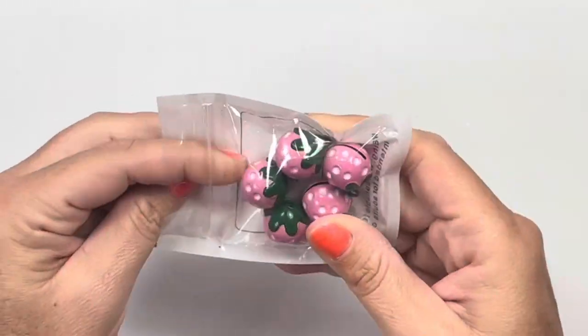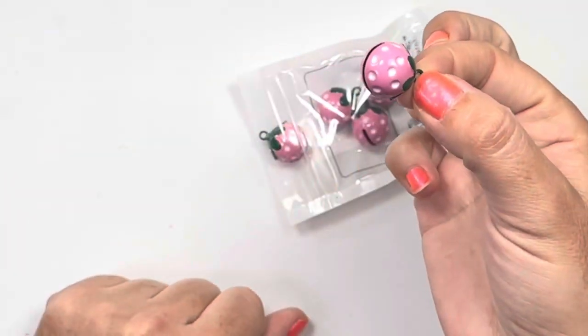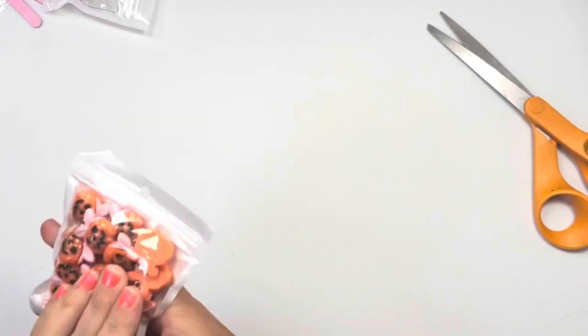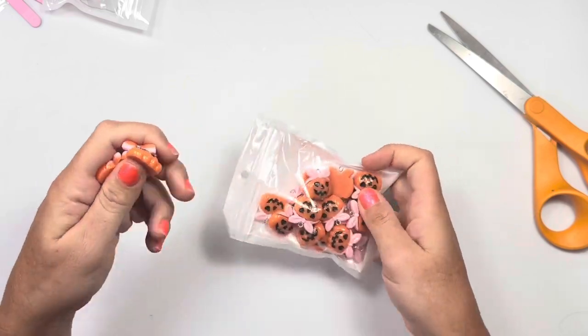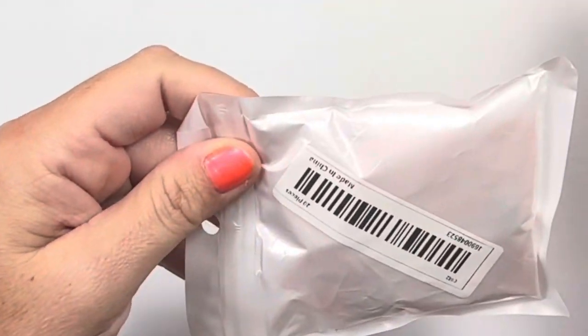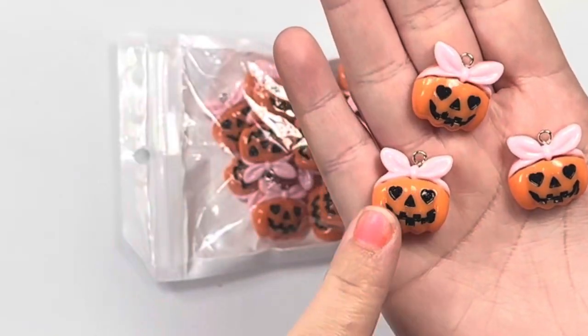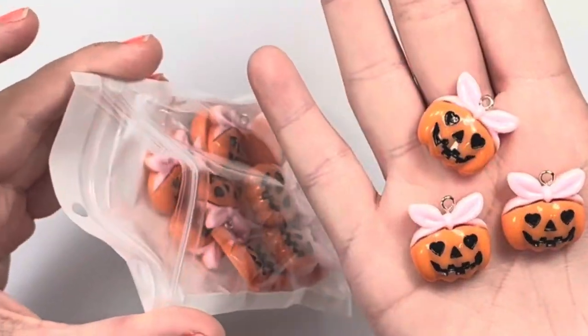And then these oh my gosh so adorable. When I saw these I was like gotta get these. Look at these pumpkins. They're little charms. You get a bunch, 20 pieces. So they're little jack-o-lanterns with heart eyes and a cute little bow bandana with the eyelet already set in there.